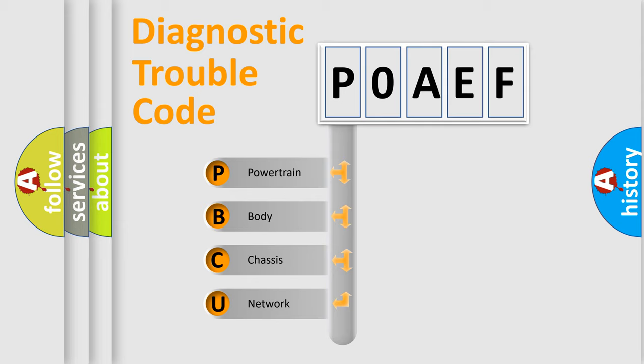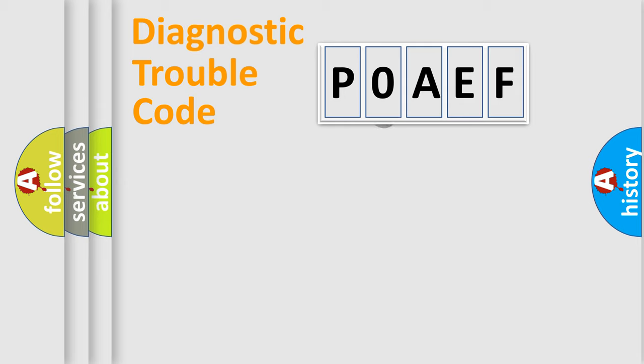We divide the electric system of automobile into four basic units: Powertrain, Body, Chassis, Network. This distribution is defined in the first character code.